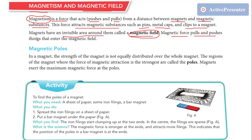So magnetism is a force and the invisible area around magnet is called magnetic field. Now let's talk about magnetic poles. In a magnet, the strength of the magnet is not equally distributed over the whole magnet.